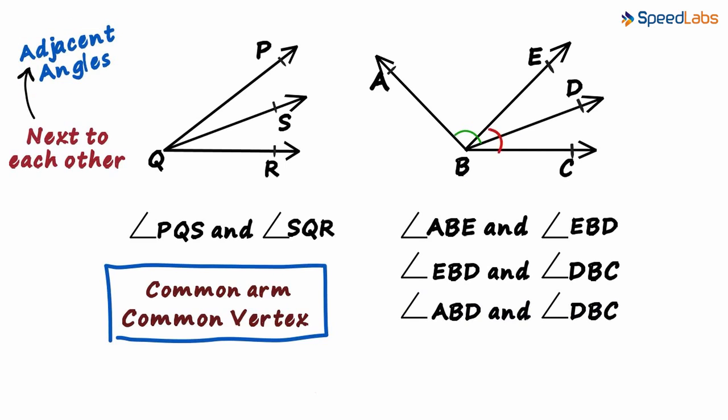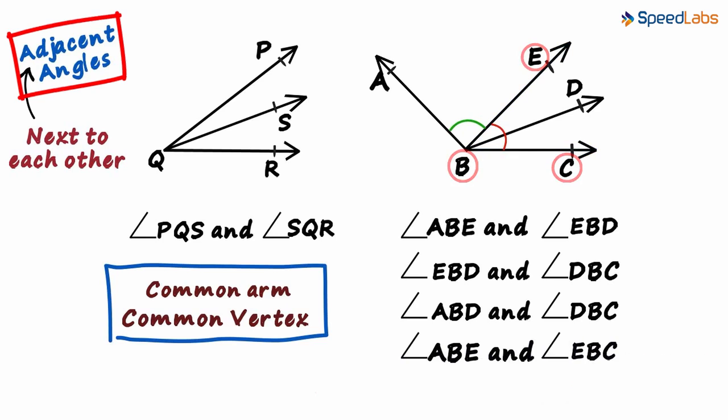Now look at this red angle and this green angle. Yes, they are adjacent pairs too. They have a common arm BE and a common vertex B. So angle ABE and angle EBC are adjacent angles.